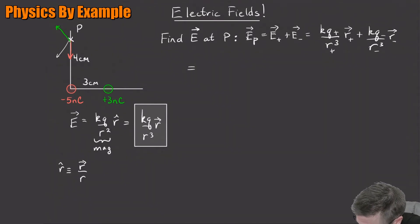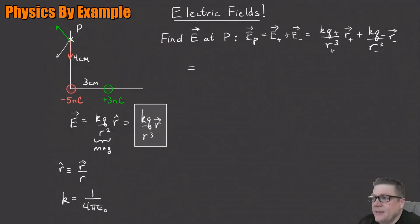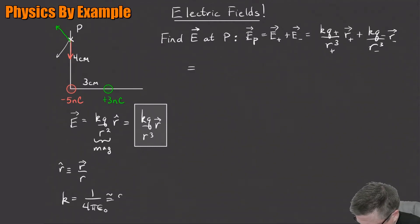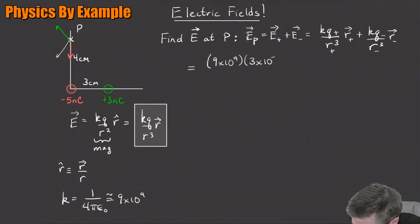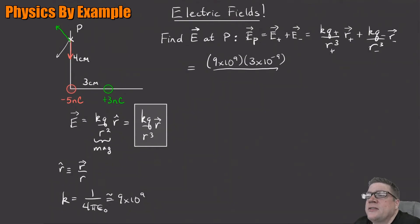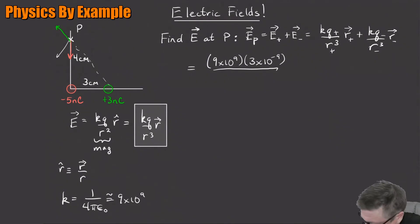k is 1 over 4π epsilon-naught, but it's just convenient to use 9×10⁹. So I get 9×10⁹ times q-plus, which is 3 nanocoulombs — 3×10⁻⁹ — divided by the distance from the plus-3 charge up to point P. That's 3 centimeters and 4 centimeters, so it's a 3-4-5 triangle, making the distance 5×10⁻² meters, cubed.